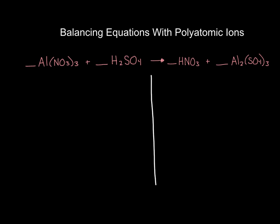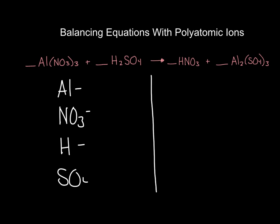We're going to do the same thing we did in class — list out the elements and how many we have — except this time we're going to treat the polyatomics as one thing. So I'll write down aluminum, nitrate, hydrogen, and sulfate. I'm going to do that exact same list on the right-hand side: aluminum, nitrate, hydrogen, and sulfate.